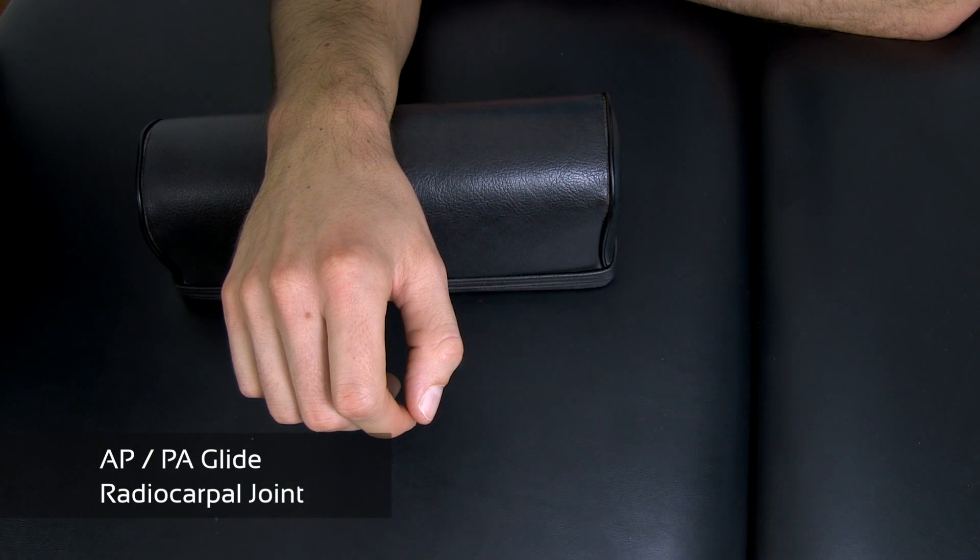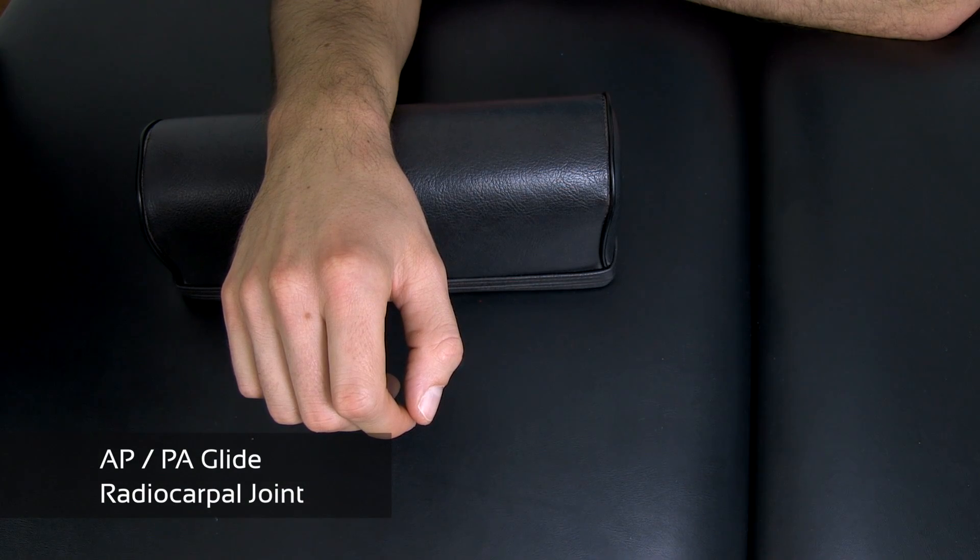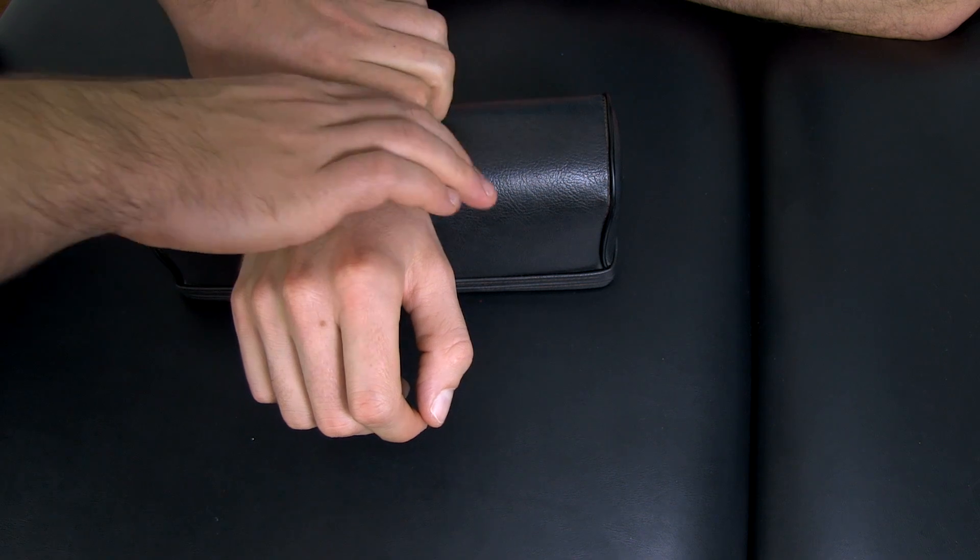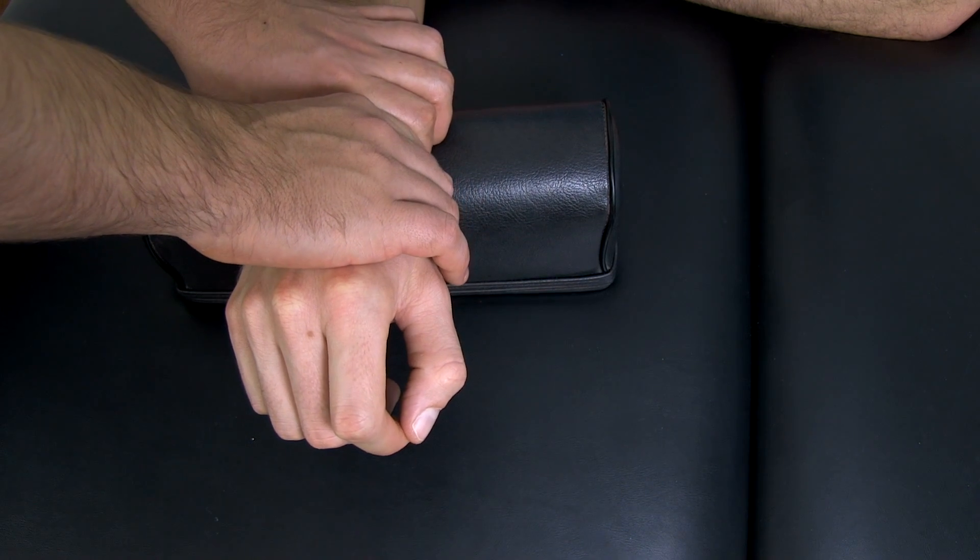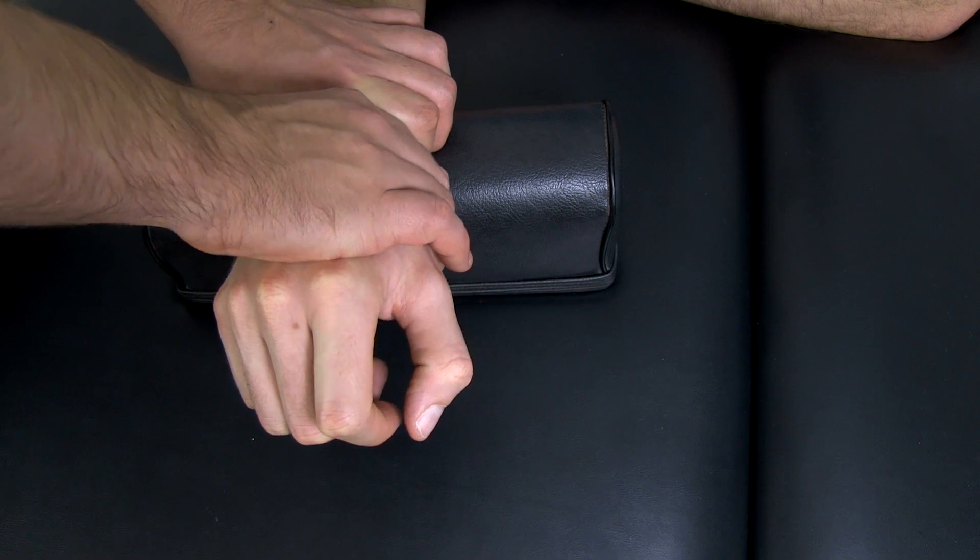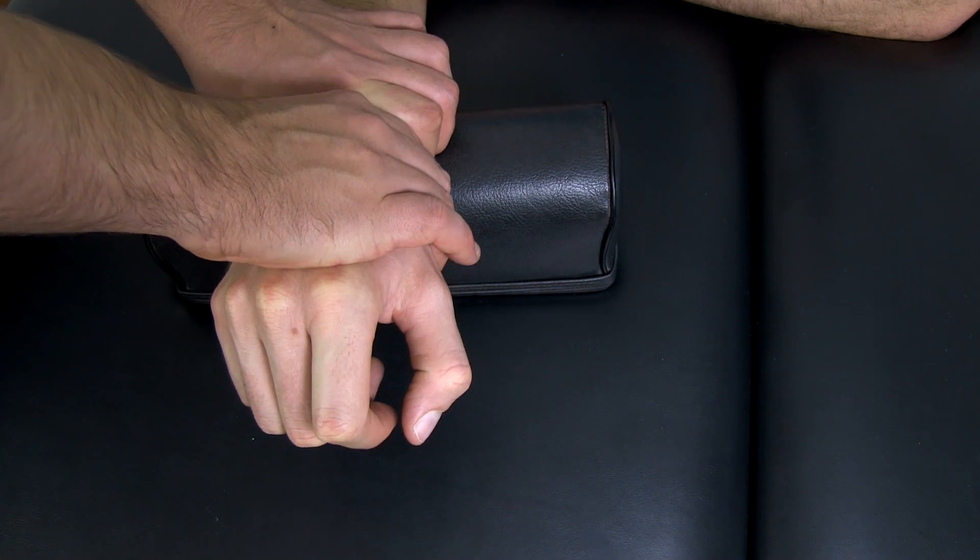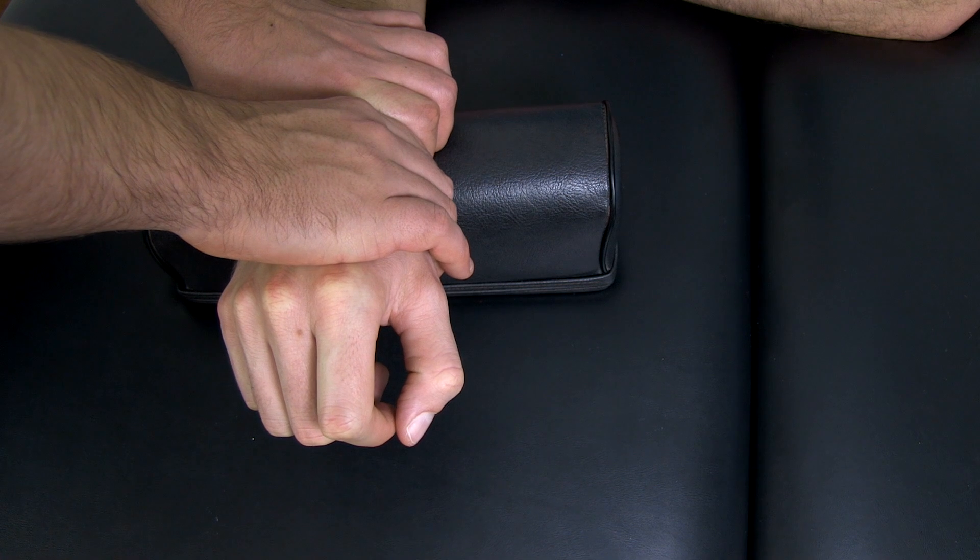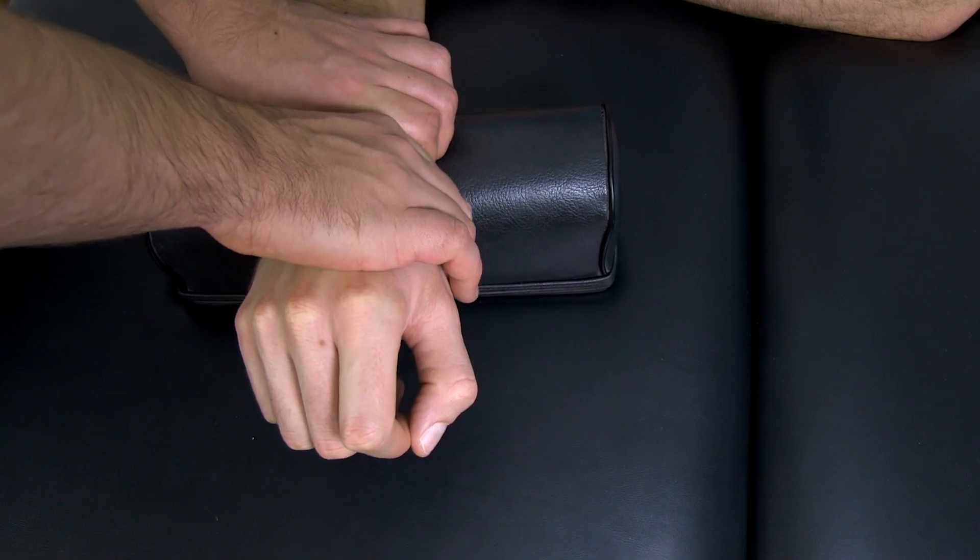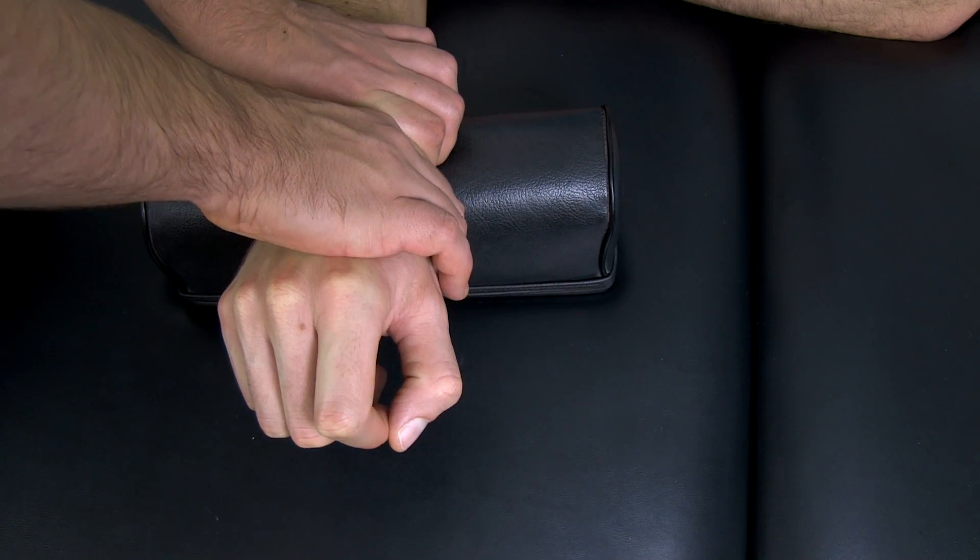For the AP and PA glide, the fixation stays the same as with traction. For the AP glide, pull the proximal row of the carpal bones upwards, and for the PA glide, push it downwards.